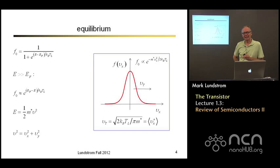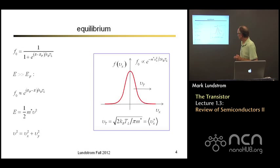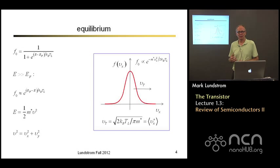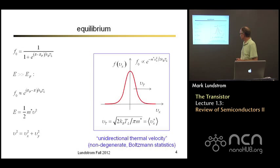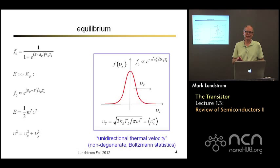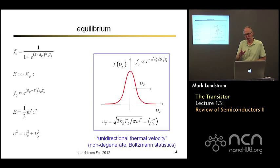If I look at just the average velocity of electrons moving in the plus-x direction only, that's something we can compute. This is a very important velocity we'll see over and over again. It equals sqrt(2kT / πm*) — the unidirectional thermal velocity, assuming a non-degenerate semiconductor with Boltzmann statistics. Note there are different thermal velocities: the root mean square velocity from the previous discussion, and this unidirectional thermal velocity. Both are numerically on the order of 10^7 cm/s, but it will be very important for us to keep these velocities straight.